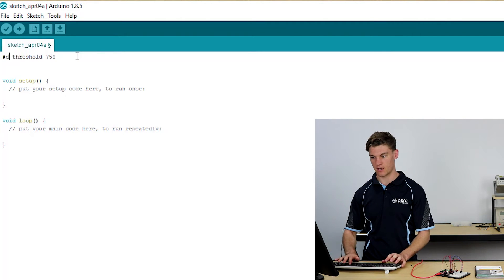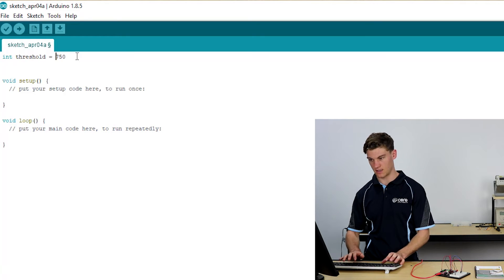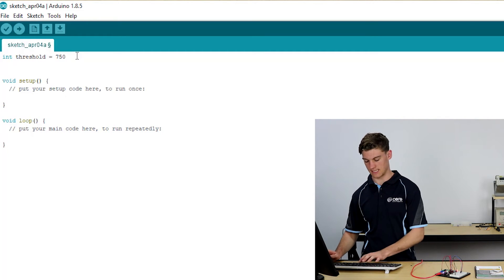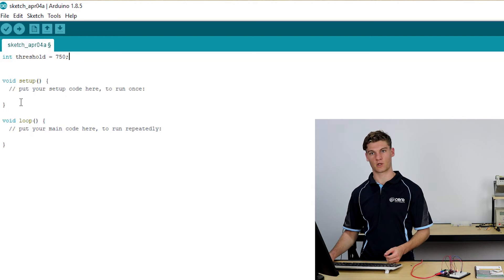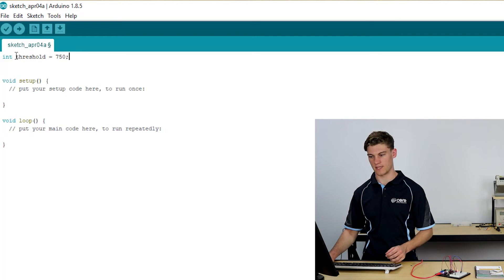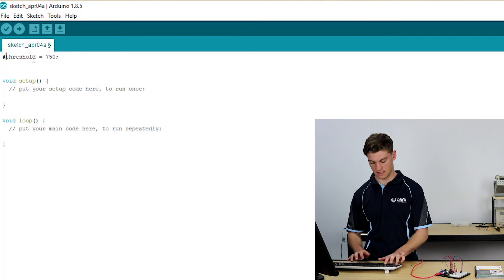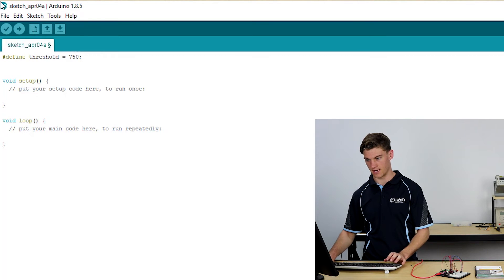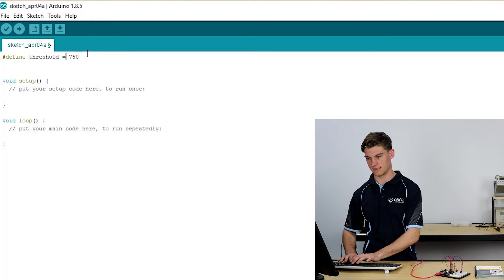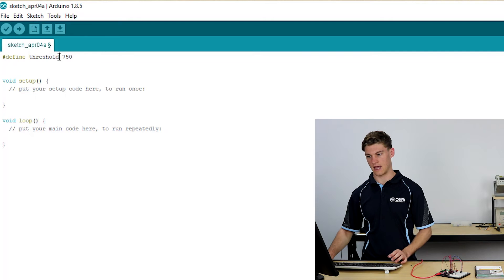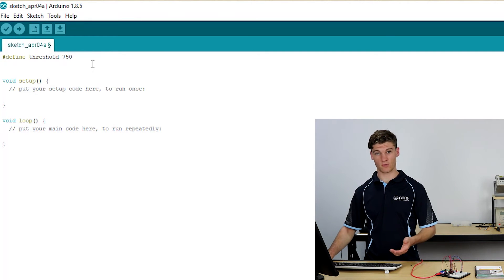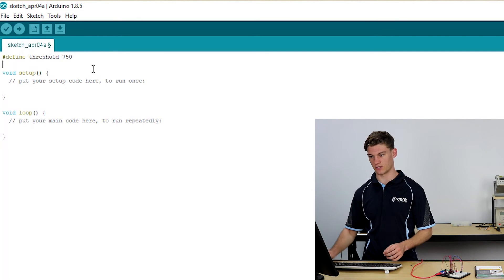If instead of defining it we wanted to call it an int and we wanted to keep it there, we can do that too. We just need to close it. We're going to be using the define for this circuit. So we're defining the threshold to be 750.